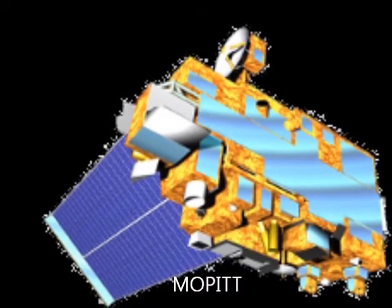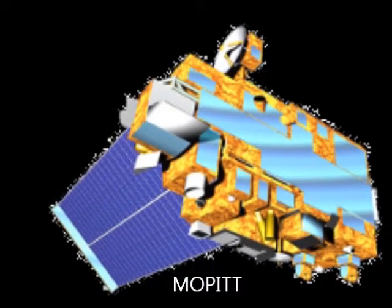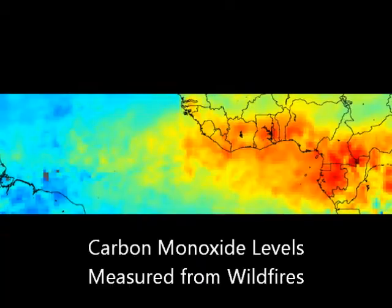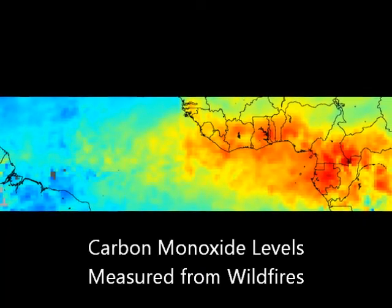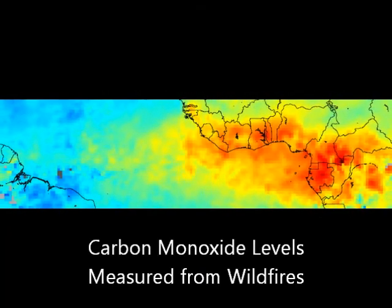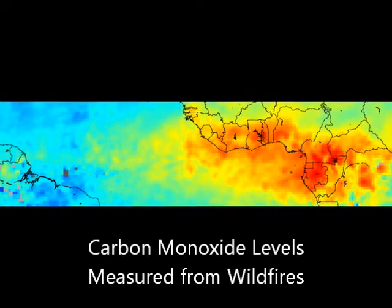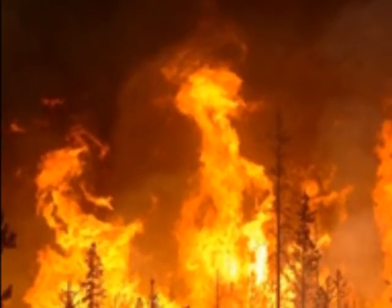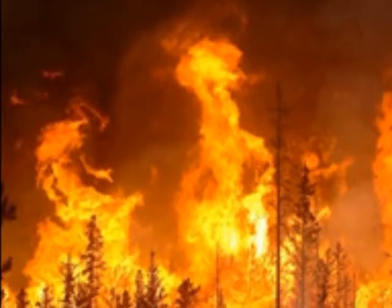Another instrument utilized by NASA is called MOPITT — the Measurement of Pollution in the Troposphere. Its satellite sensor detects levels of carbon monoxide in the lower atmosphere and its interactions with the land and ocean biospheres. MOPITT is able to trace carbon monoxide back to the origins of wildfires.